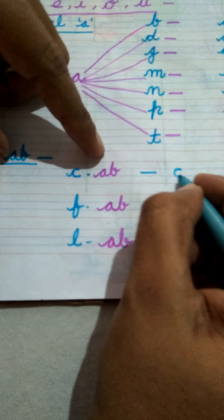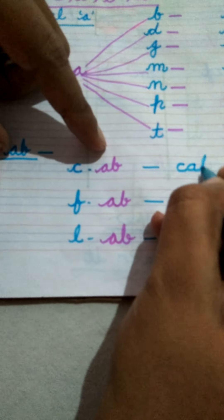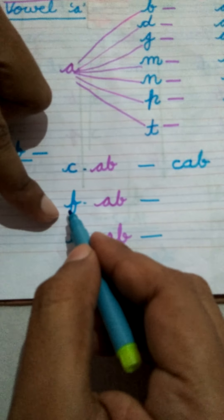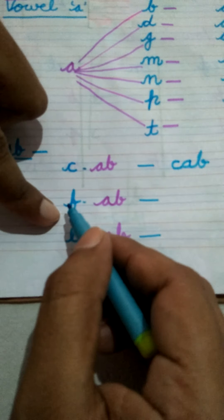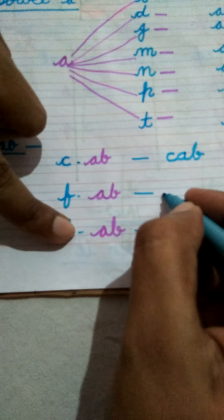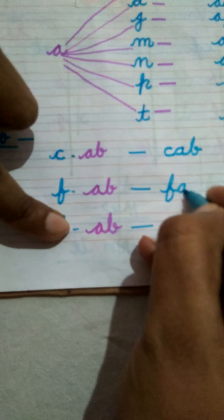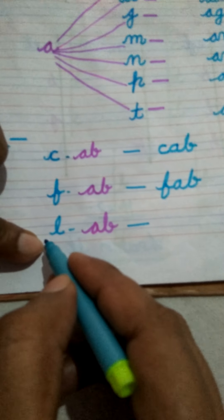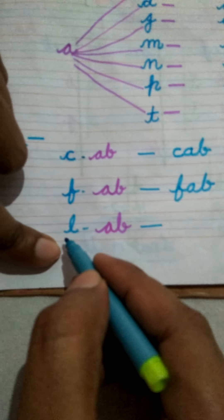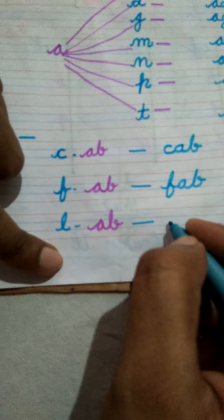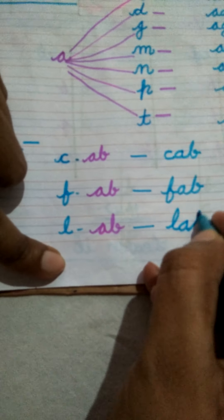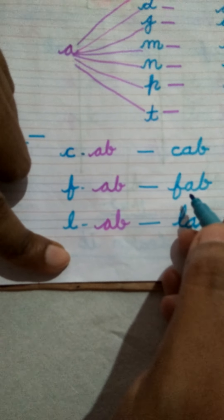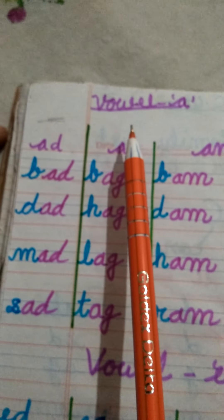What is CVC? C का मतलब Consonant, V का मतलब Vowel, and फिर C का मतलब Consonant — Consonant, Vowel, Consonant. बेटा, मेरा previous video था A to Z हिंदी में phonics sound — मैंने आपको बताया। I hope कि आपको phonics sound learn हो गया होगा। जब तक आप phonics sound learn नहीं करेंगे, आपको book read करने में problem होगी। So that is a must।